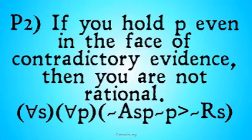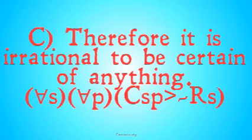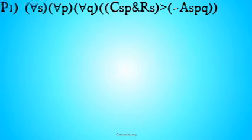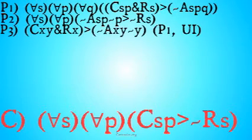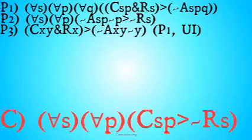Premise two is codified as: for all S and all P, it's not the case that S would alter their belief that P given not-P implies that S is not rational. Our conclusion is expressed as: for all S and all P, S is certain that P implies that it's not the case that S is rational. To begin the proof, we apply universal instantiation to premise one: X is certain that Y and X is rational implies that it's not the case that X would alter their belief in Y given not-Y — instantiating S as X, P as Y, and Q as not-Y.